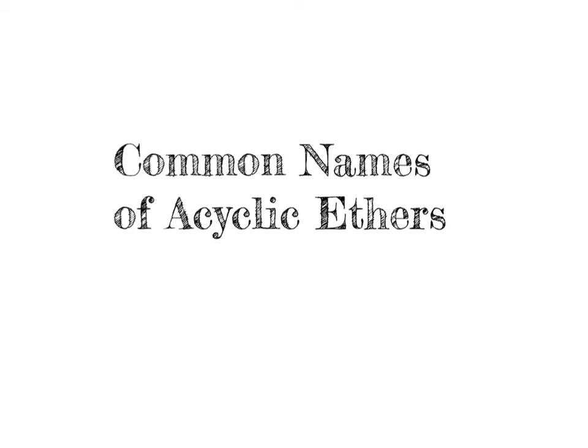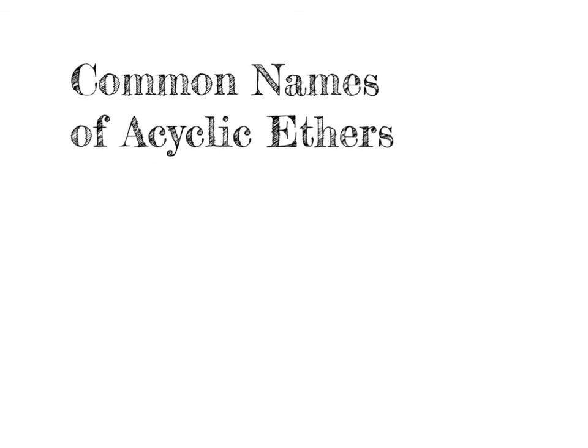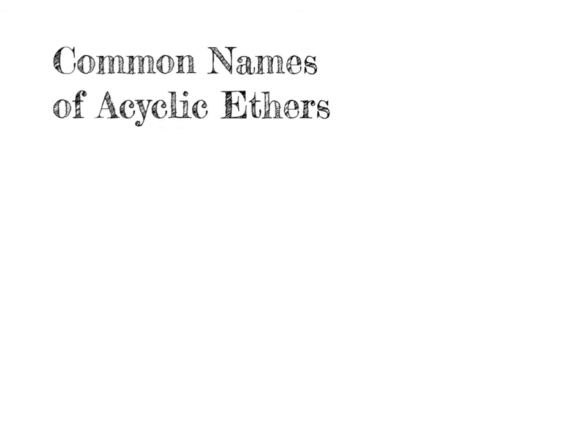In the last video, we looked at naming acyclic ethers using the IUPAC system. In this video, we're going to focus on the common names that are assigned to these ethers. The common names are historical names that date way back, long predating the IUPAC nomenclature system, and many of these names are still in use today, so it's important to be familiar with them. Let's go ahead and take a look at how we name acyclic ethers using the common nomenclature system.